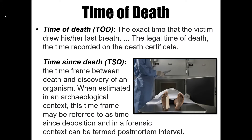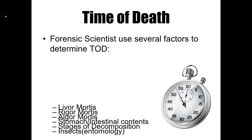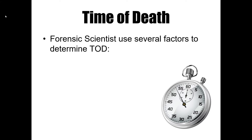Today we'll discuss a few ways that time since death is determined, but there are other methods as well. Investigators can use livor mortis, rigor mortis, and algor mortis to determine time of death, but they can also get clues from stomach or intestinal contents, the stages of decomposition, and in a future lesson we'll focus on entomology. There are many different ways investigators can determine time of death.